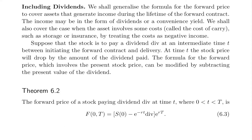In the case including dividends, we shall generalize the formula for the forward price to cover assets that generate income during the lifetime of the forward contract. The income may be in the form of dividends or a convenience yield. We shall also cover the case when the assets involve some costs, called the cost of carry, such as storage or insurance, by treating the costs as negative income. Suppose that the stock is to pay a dividend div at an intermediate time t between initiating the forward contract and delivery.